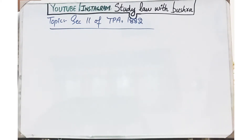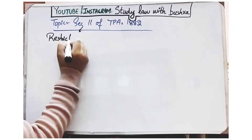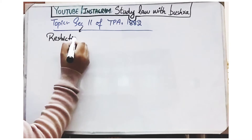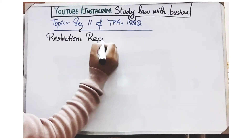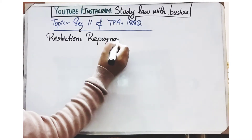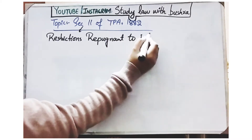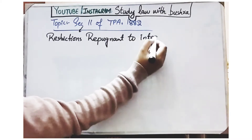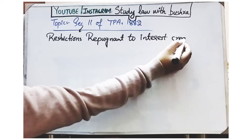Section 11 of TPA 1882. Section 11 basically deals with Restrictions Repugnant to the Interest Created. This is the title of this section.